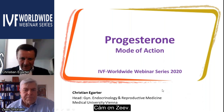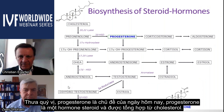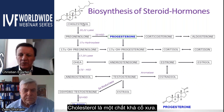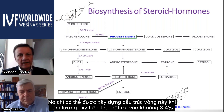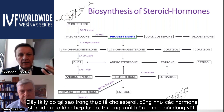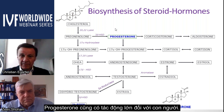Thank you very much. Ladies and gentlemen, progesterone is a steroid hormone whose parent compound is cholesterol. Cholesterol is quite an ancient substance — its ring structure could only be built when oxygen tension was around three to four percent on Earth, which is why cholesterol and the resulting steroid hormones are present in practically every animal species. Progesterone thus has a great impact in humans.